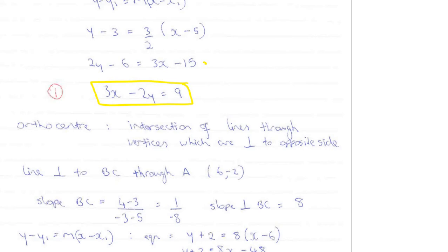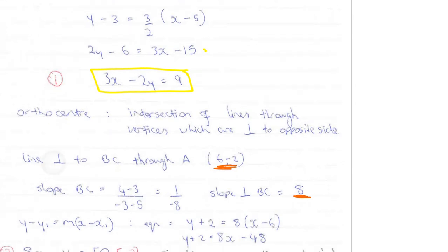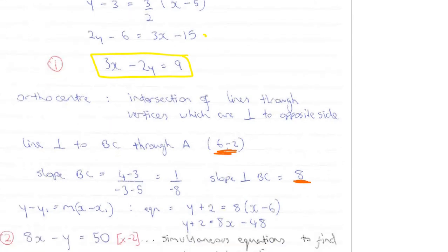Now the equation of that line which is perpendicular to BC, well we choose our point A on the line and we choose our slope 8. And that equation turns out to be 8x minus y is equal to 50.